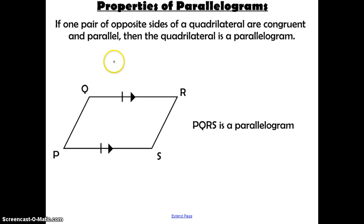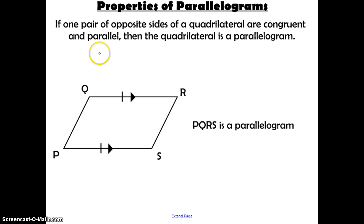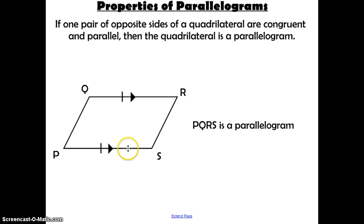This last one is a property, not in biconditional form. It is only used when we're trying to prove that a quadrilateral is a parallelogram. It states that if you have one pair of opposite sides that are both congruent and parallel, then the quadrilateral is a parallelogram. You only need that one pair of opposite sides to be both congruent and parallel — if that's the case, then PQRS is a parallelogram.